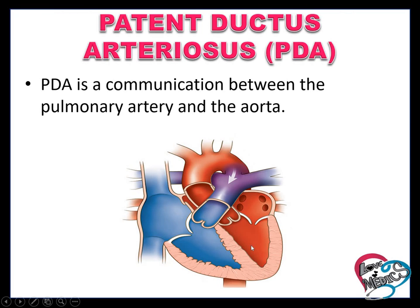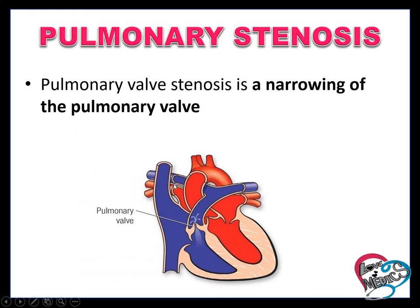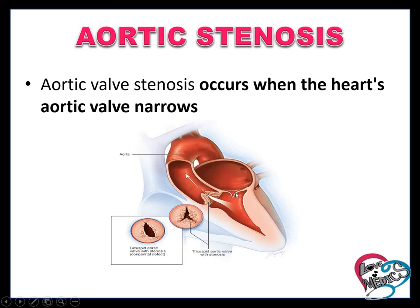Patent ductus arteriosus (PDA) is the communication between the pulmonary artery and the aorta. Coarctation of the aorta is a narrowing or constriction in a portion of the aorta. Pulmonary stenosis is the narrowing of the pulmonary valve. Aortic stenosis is the narrowing of the aortic valve.